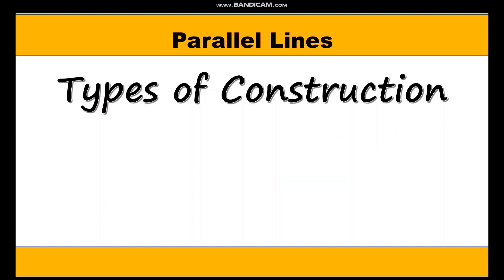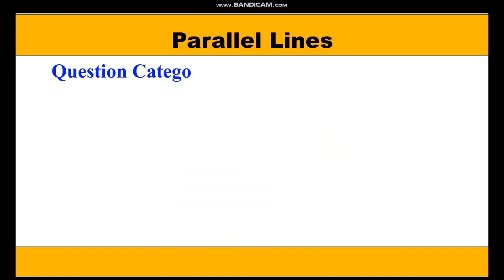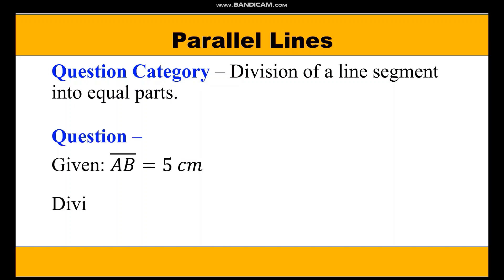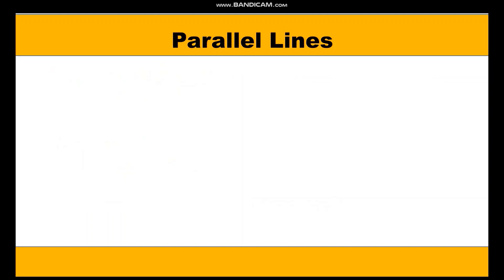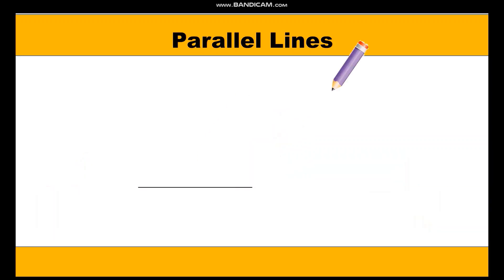Let's start with division of a line segment into equal parts. This is the first category of construction. Let's take up a question: we are given AB equal to 5 cm, divide it internally into 6 equal parts. Now let's start the construction. First of all, draw a line segment AB equal to 5 cm.